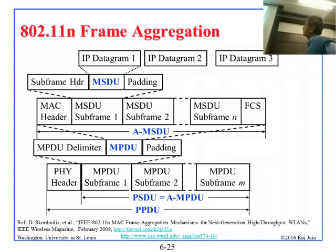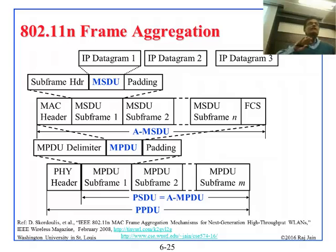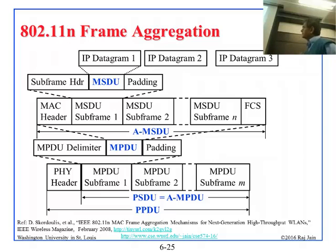You have a subframe header, padding, and MSDU put together, and then you have the whole thing with a MAC header and FCS. Then you take these MPDUs, put them into MPDU subframes, and you can take multiple MPDUs and put them into the PHY layer with a PHY header. This whole thing is like frame bursting where you have multiple MPDUs and don't have to resynchronize. You have a header in front, then PHY, PHY, and basically lots of MACs, and this becomes a PPDU — PLCP protocol data unit.